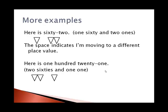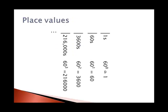The place values are powers of 60. Just like in base 10, the place values are powers of 10. So the place values in Babylonian, we start with 1s on the far right, then 60s, and then 3600s, which is 60 squared. And finally 216,000, which is 60 to the third power.